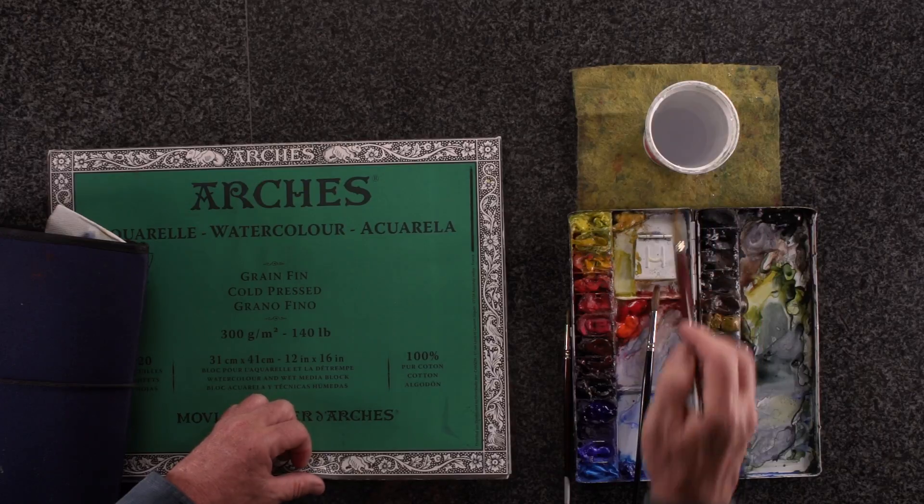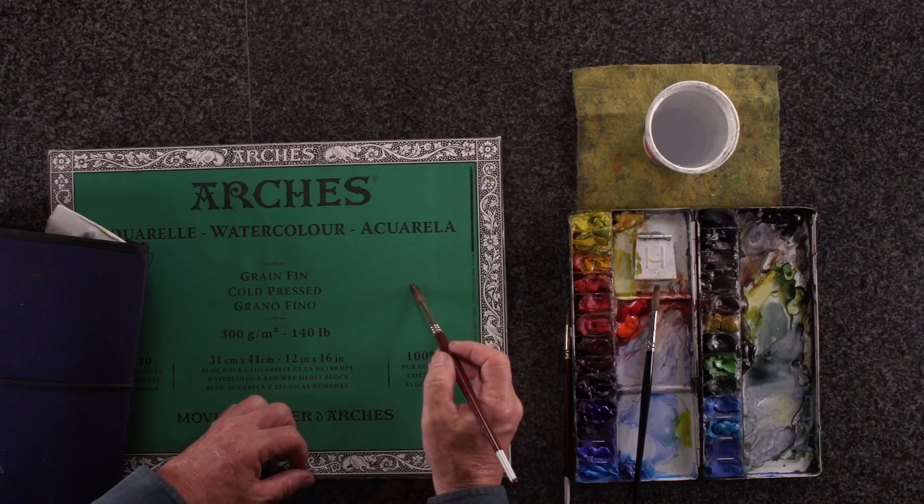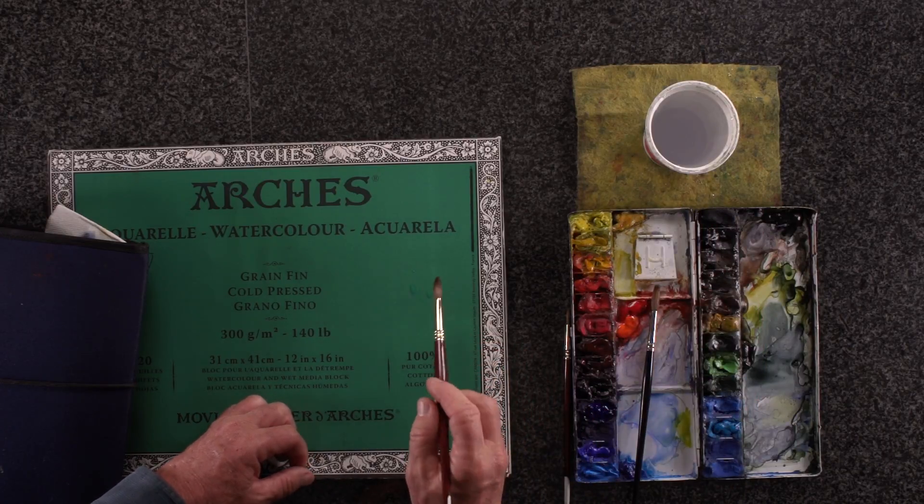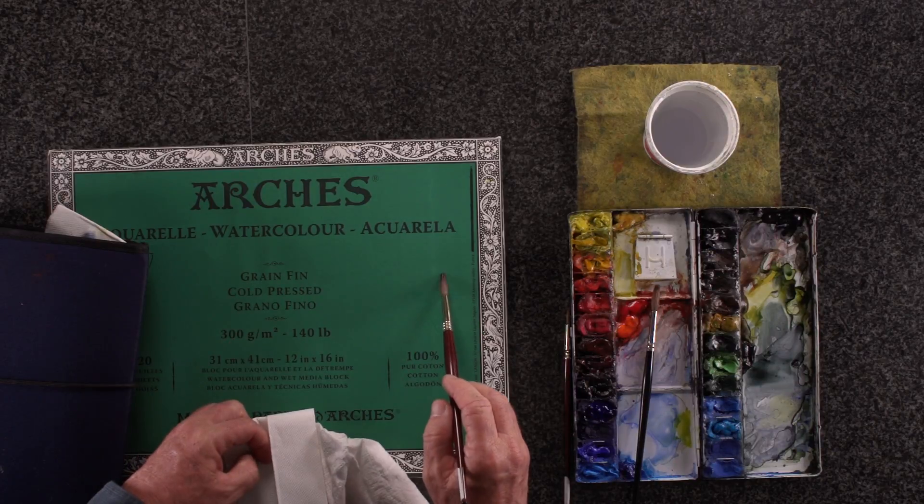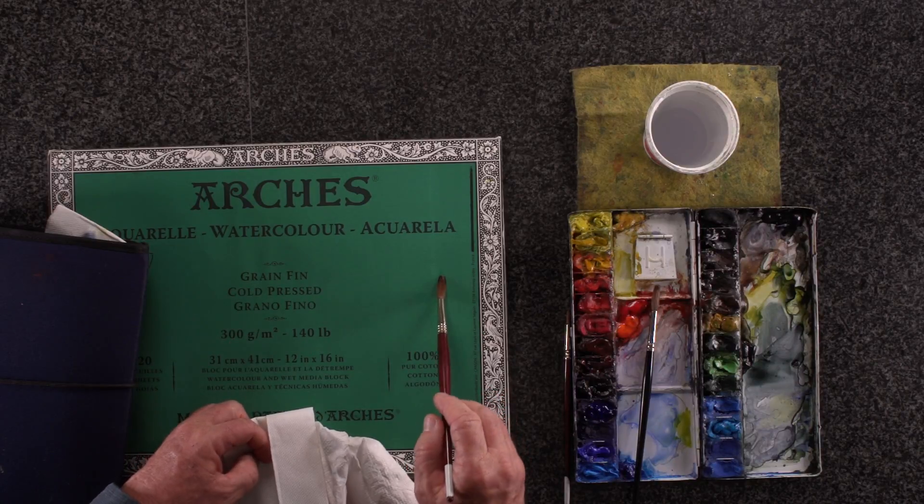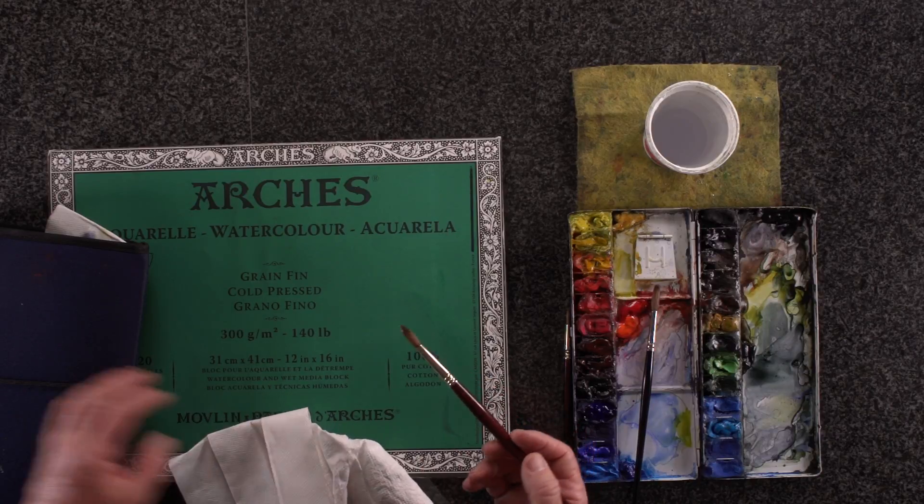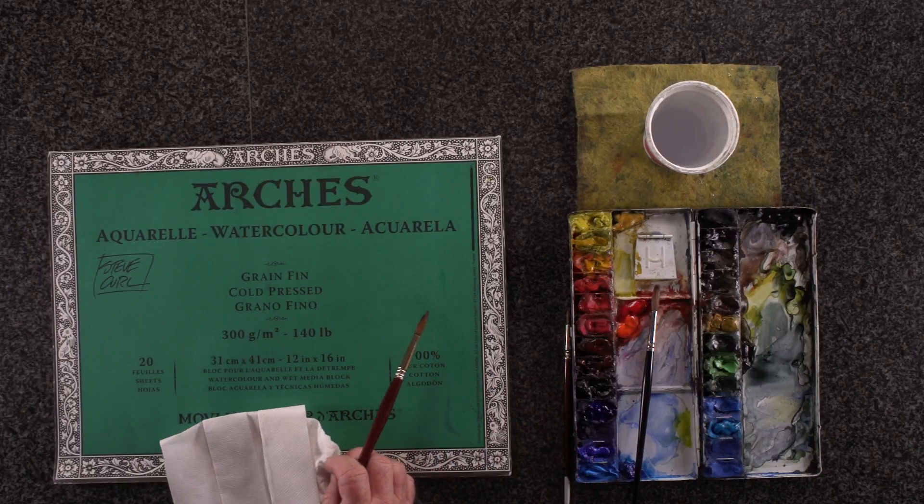You also want to look for what I call its resilience or its snap. So when you place it on the paper, does it return to its shape? And the third thing you want to look for is its ability to come to a point.